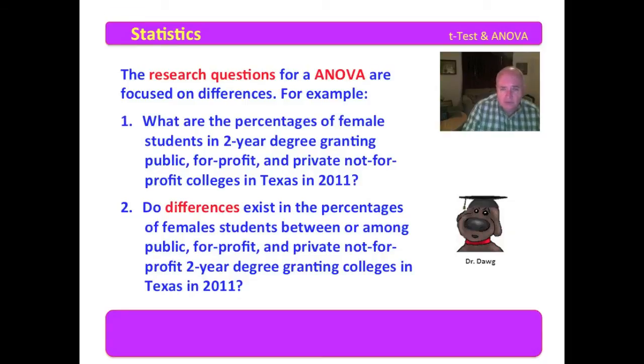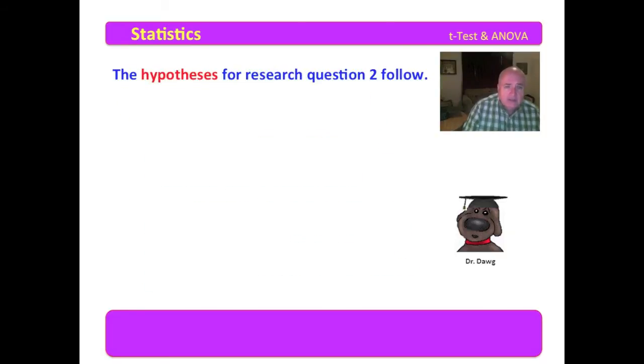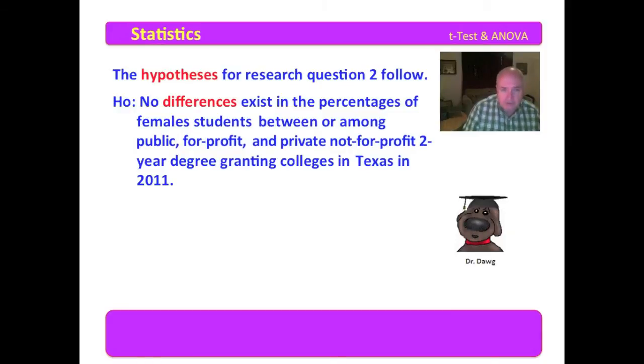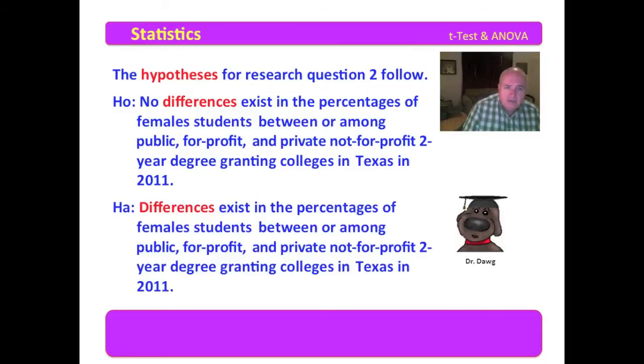Your research hypothesis would follow research question two. Research question one is descriptive and does not require hypotheses. Research question two is methodology and does require hypotheses. So your hypotheses, and I use hypotheses plural because we have a null and an alternate hypothesis. The null hypothesis is that no difference exists in the percentage of female students between or among public, for-profit, and private, not-for-profit, two-year degree granting colleges in Texas in 2011. And the alternate hypothesis is that differences exist. So the null is no differences exist, and the alternate is in the affirmative that the differences do exist in the percentages of female students. Now you have a pretty good layout here, so we will continue with some other things.